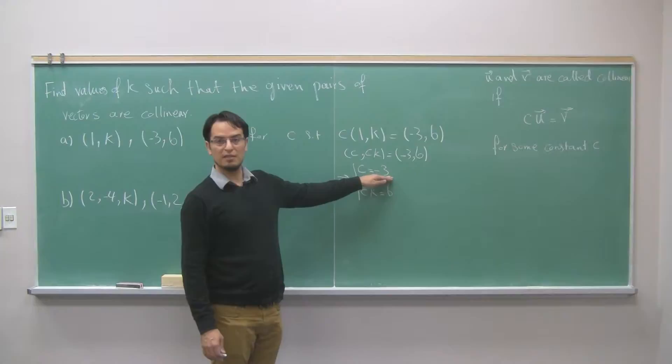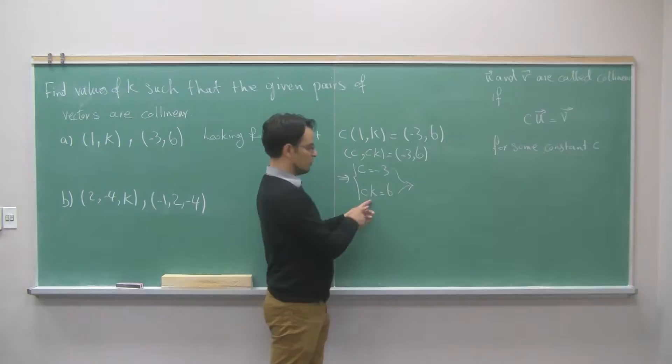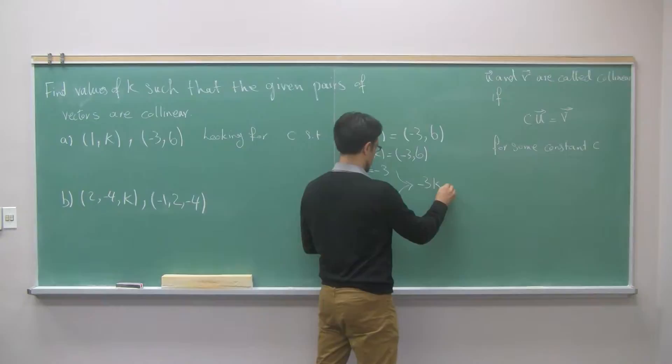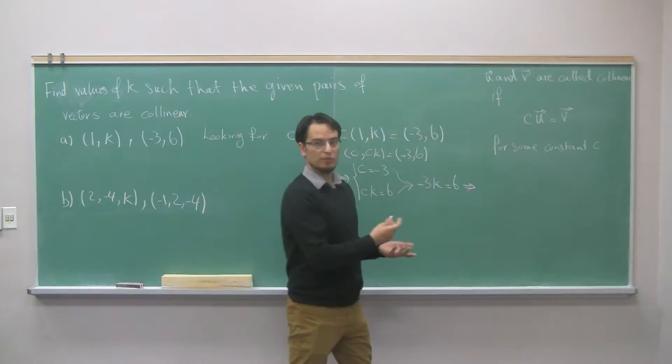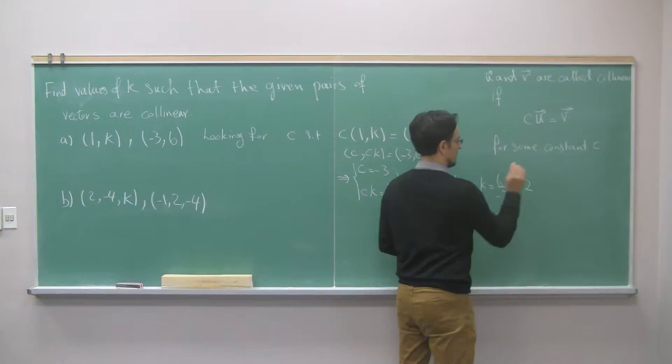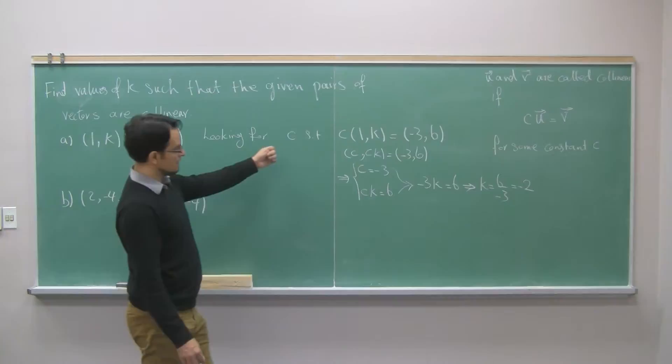Then, plug in that c equal to negative 3 to the second equation. You get negative 3 times k is equal to 6. And then, solve this equation for k. So, k is 6 over negative 3, which is negative 2. Again, I first find c. Then, using c, I found k.